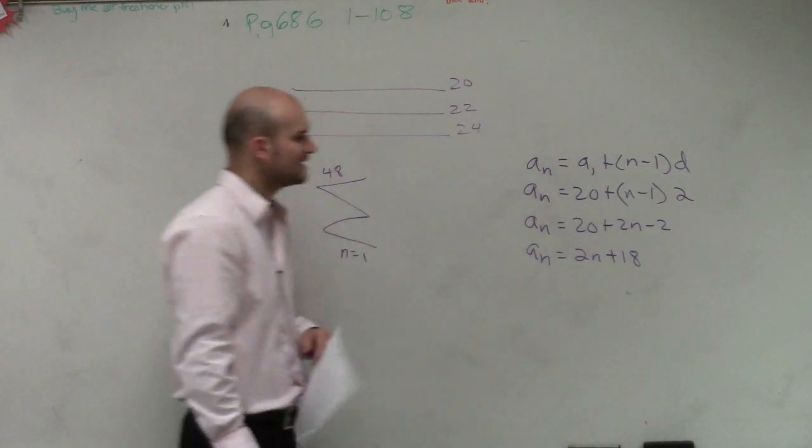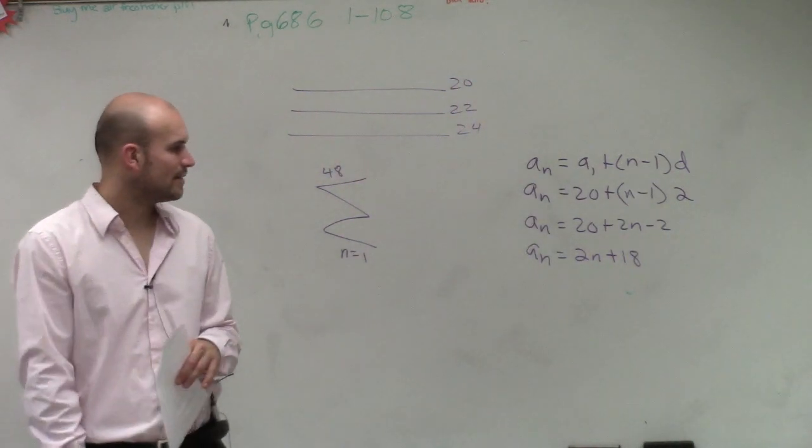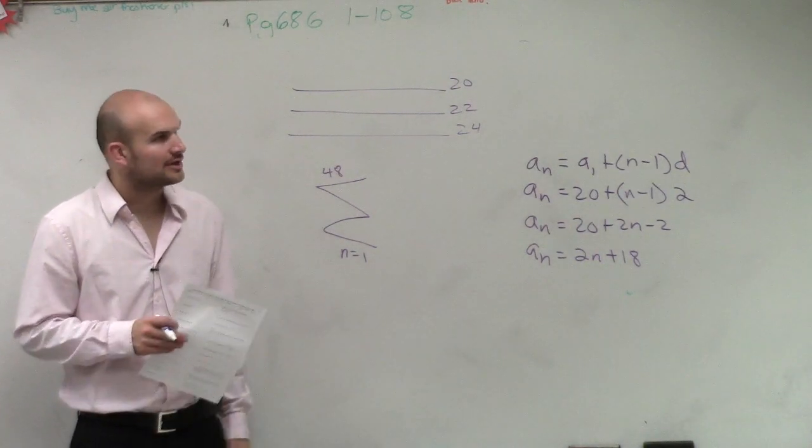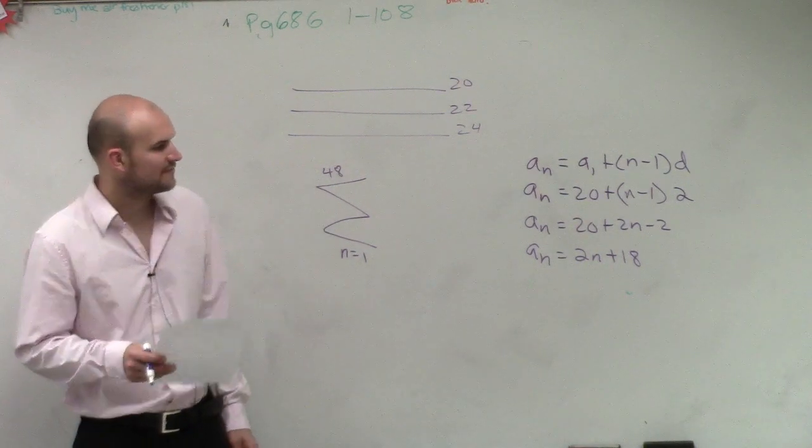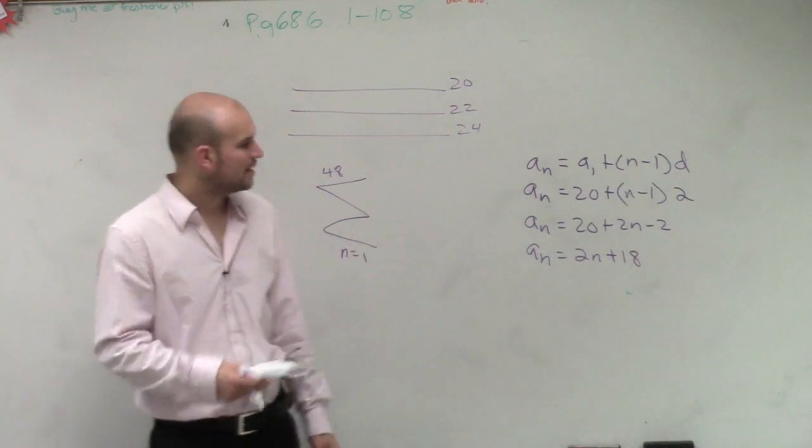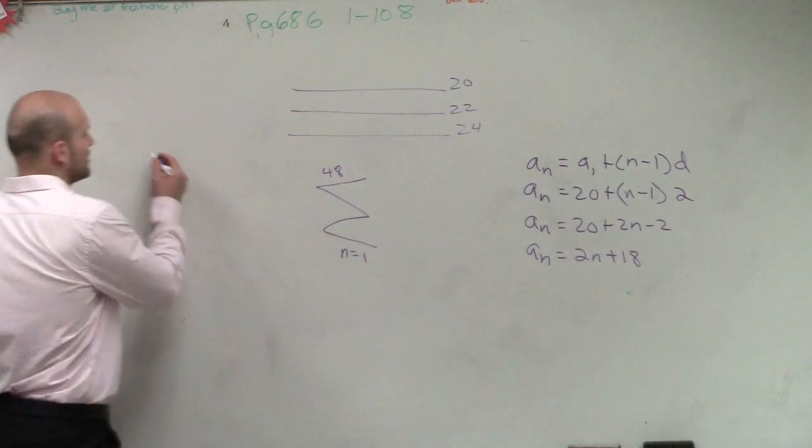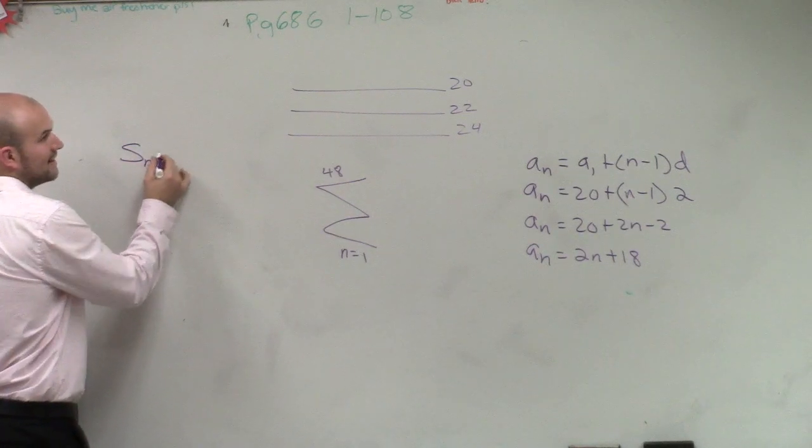So the rule is a sub n equals 2n plus 18. So now what I can go ahead and figure out is, to find the sum, what I need to do is, I need to use the sum formula, which is sum of n equals...